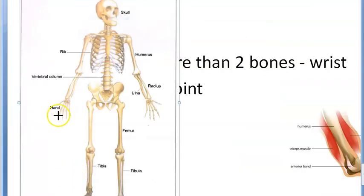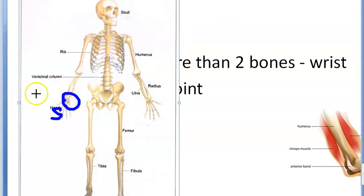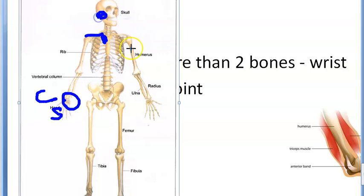Simple joint - interphalangeal. Wrist joint with so many small bones is a compound joint. Complex joint - clavicle and sternum between these two, the temporomandibular joint - it is a complex joint.